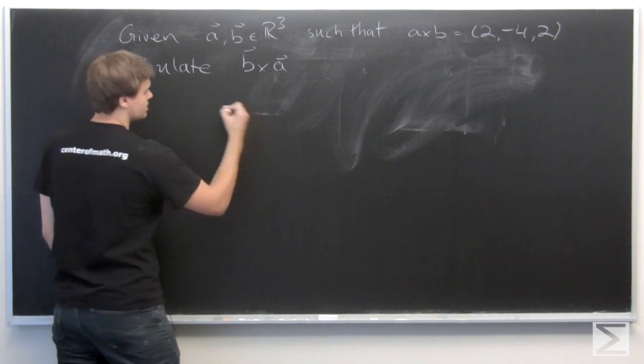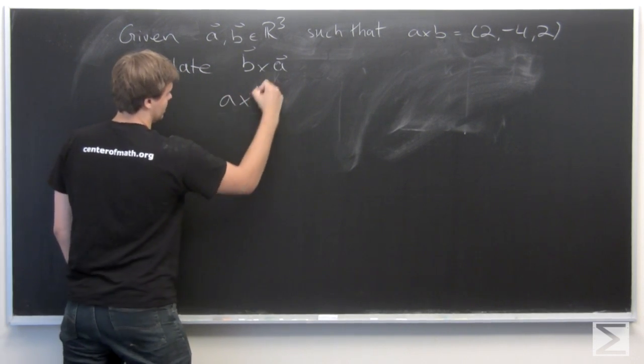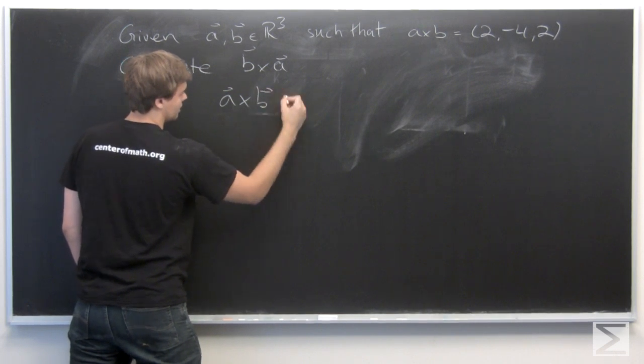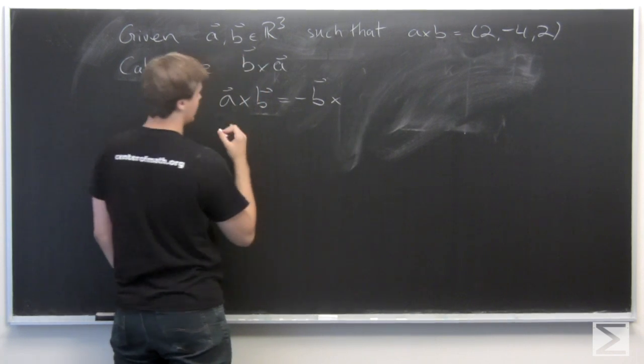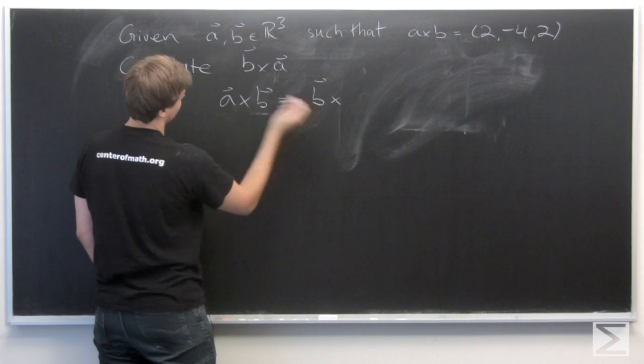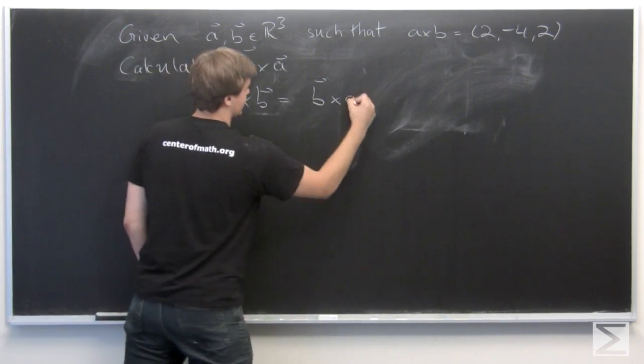So what we get is A cross B is equal to minus, well all the way around. Minus A cross B is equal to B cross A.